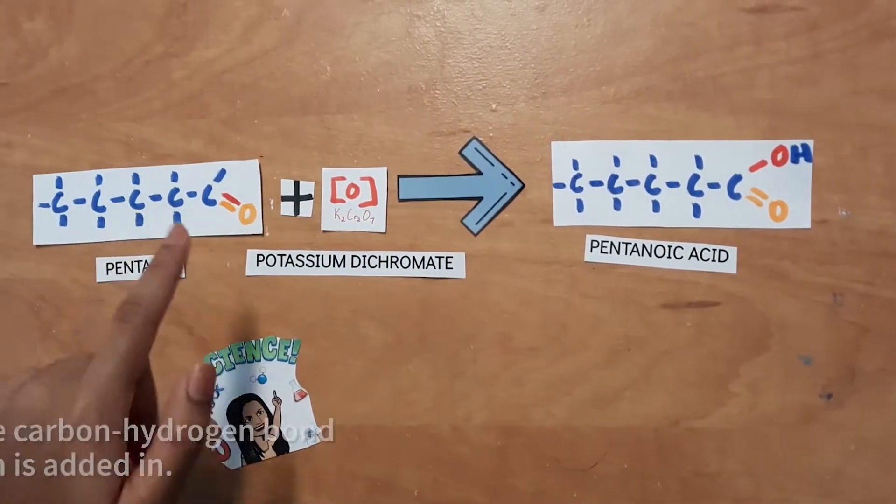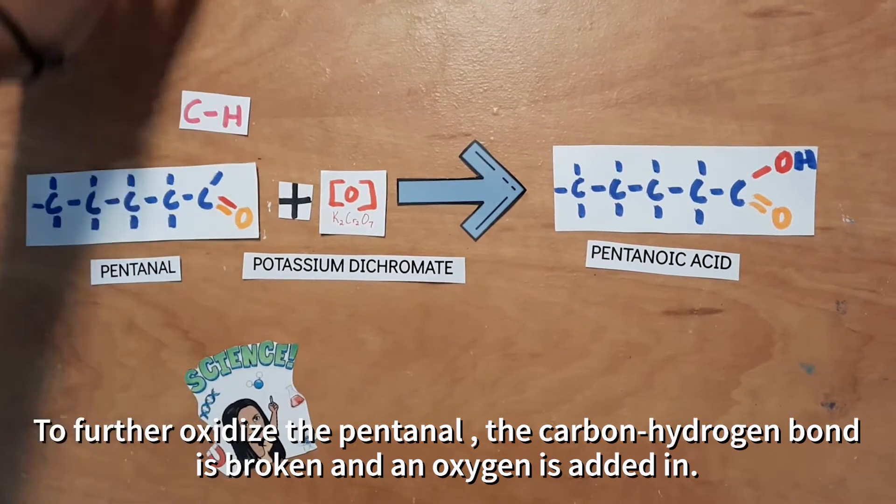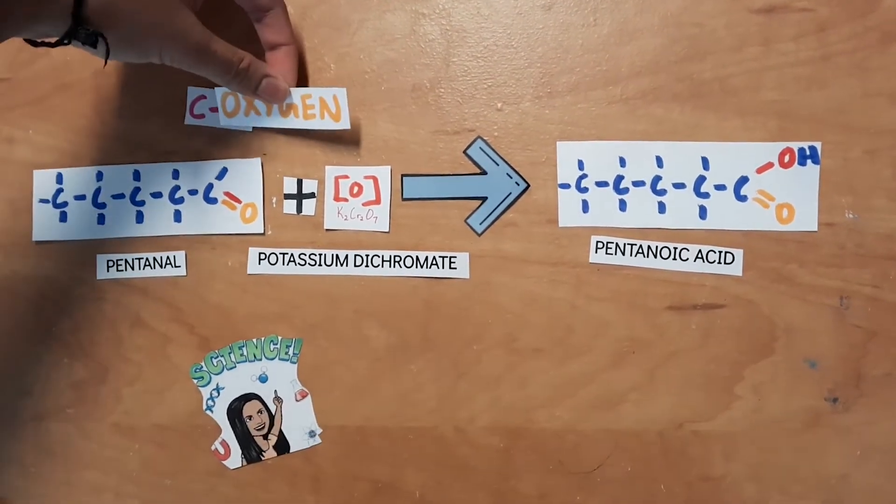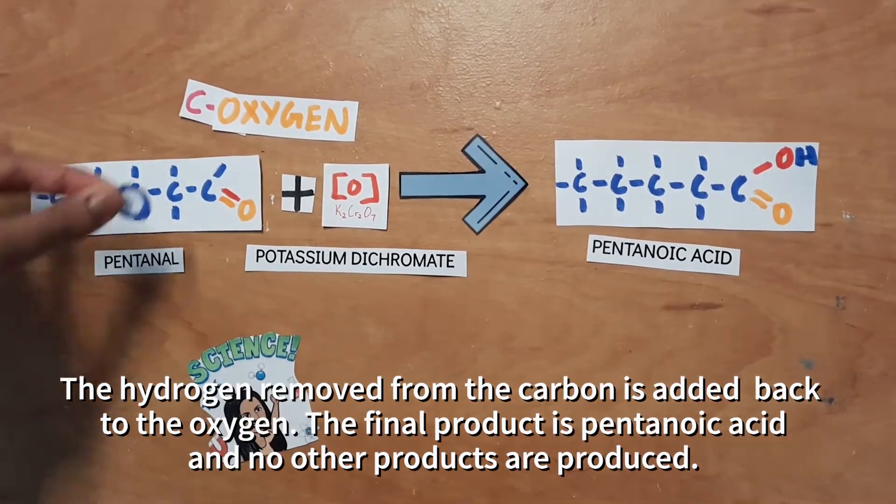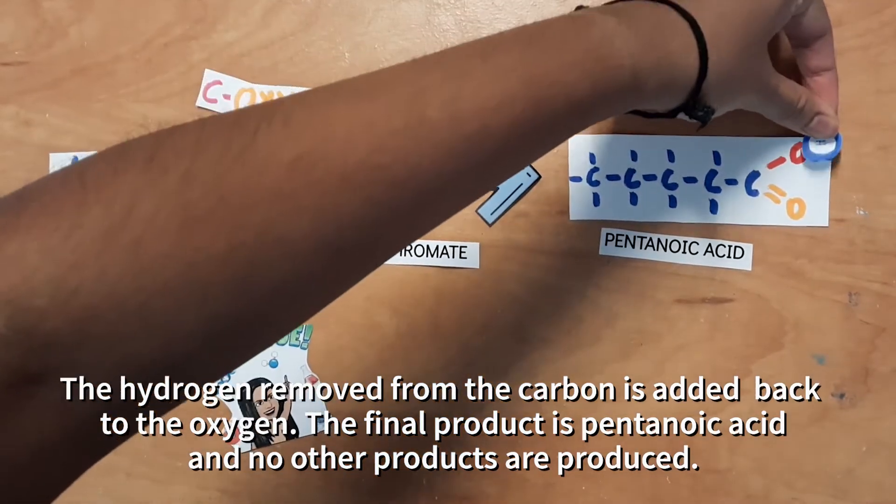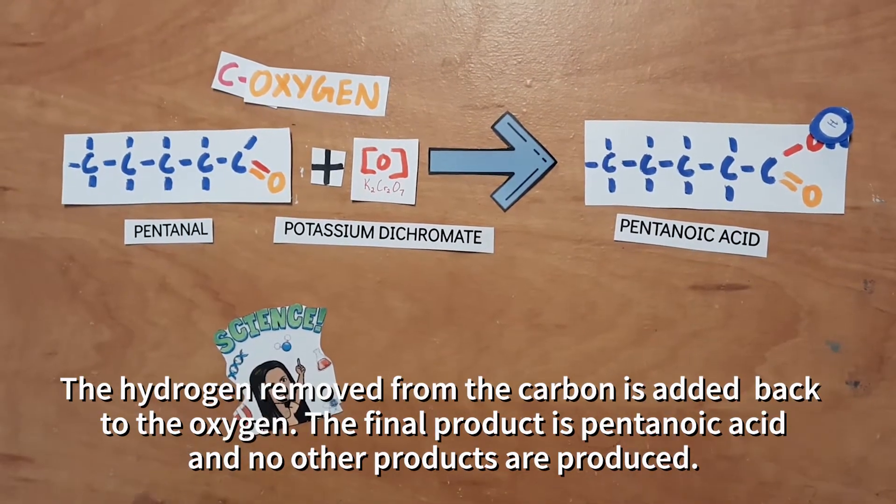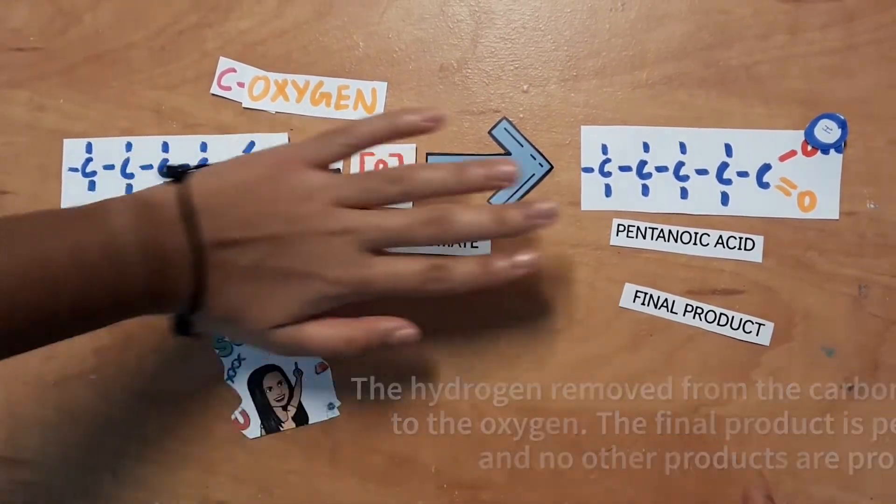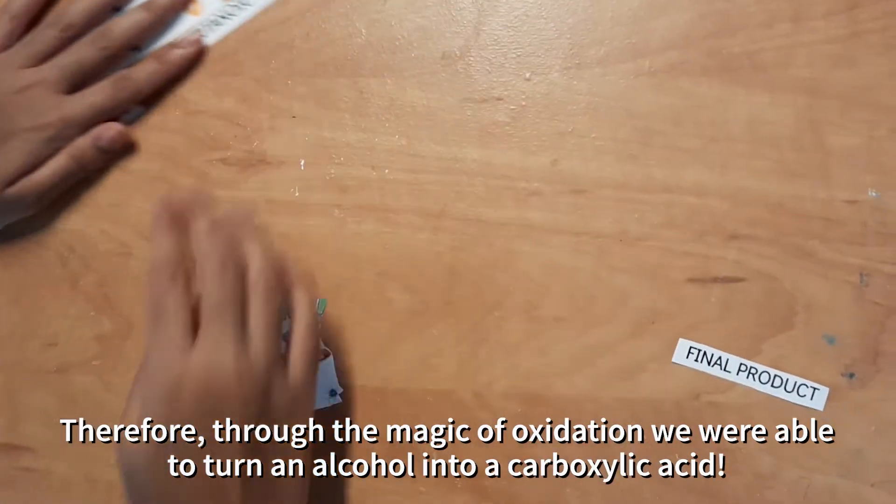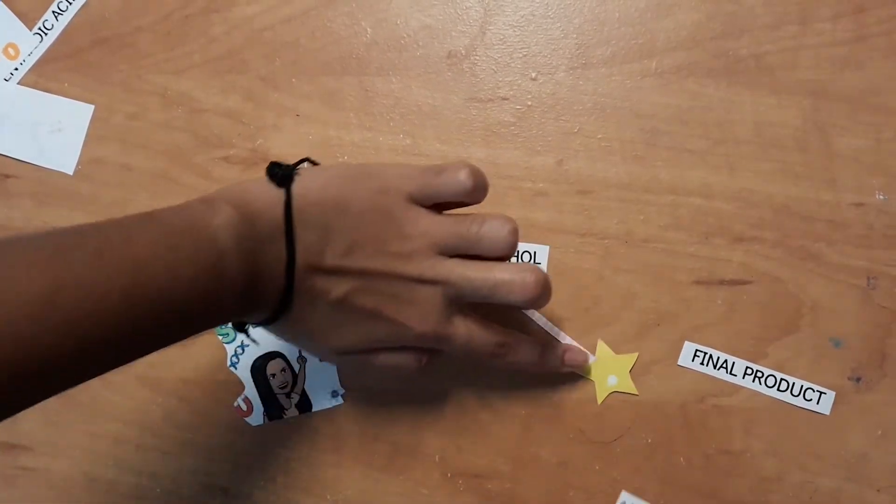To further oxidize the aldehyde pentanal, the carbon-hydrogen bond is broken, and an oxygen is added. The hydrogen removed from the carbon is added back to the oxygen. And so, our final product is pentanoic acid, and we have no other products produced. Therefore, through the magic of oxidation, we were able to turn our alcohol into a carboxylic acid.